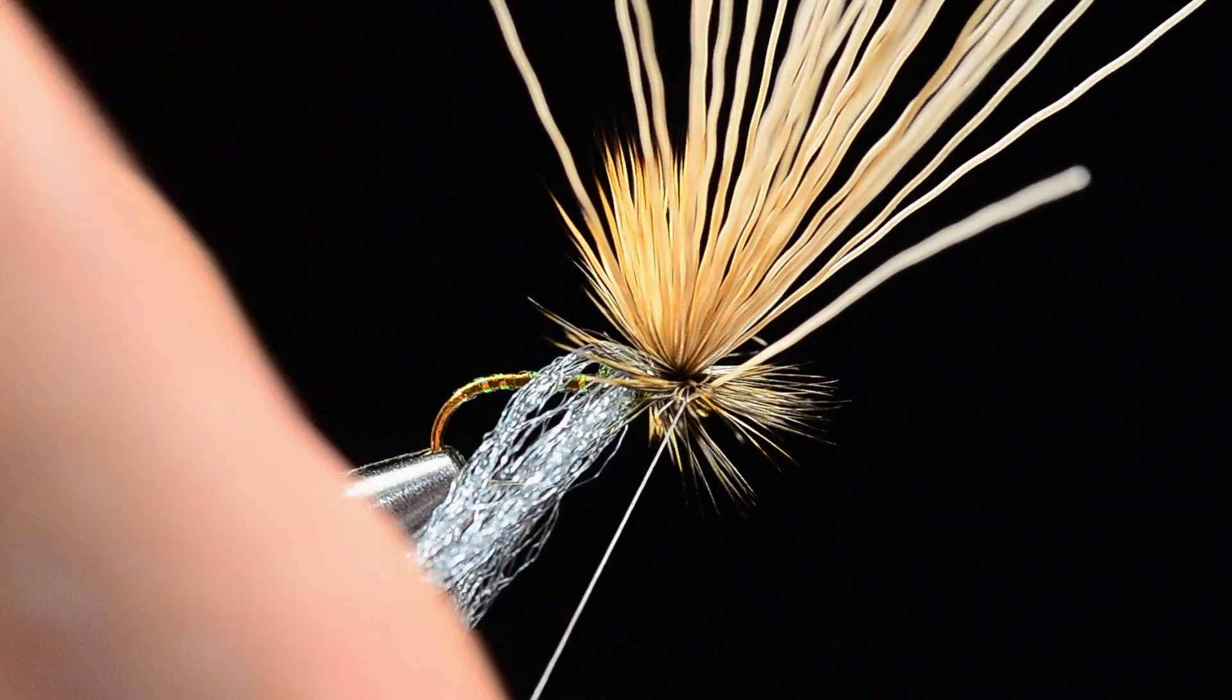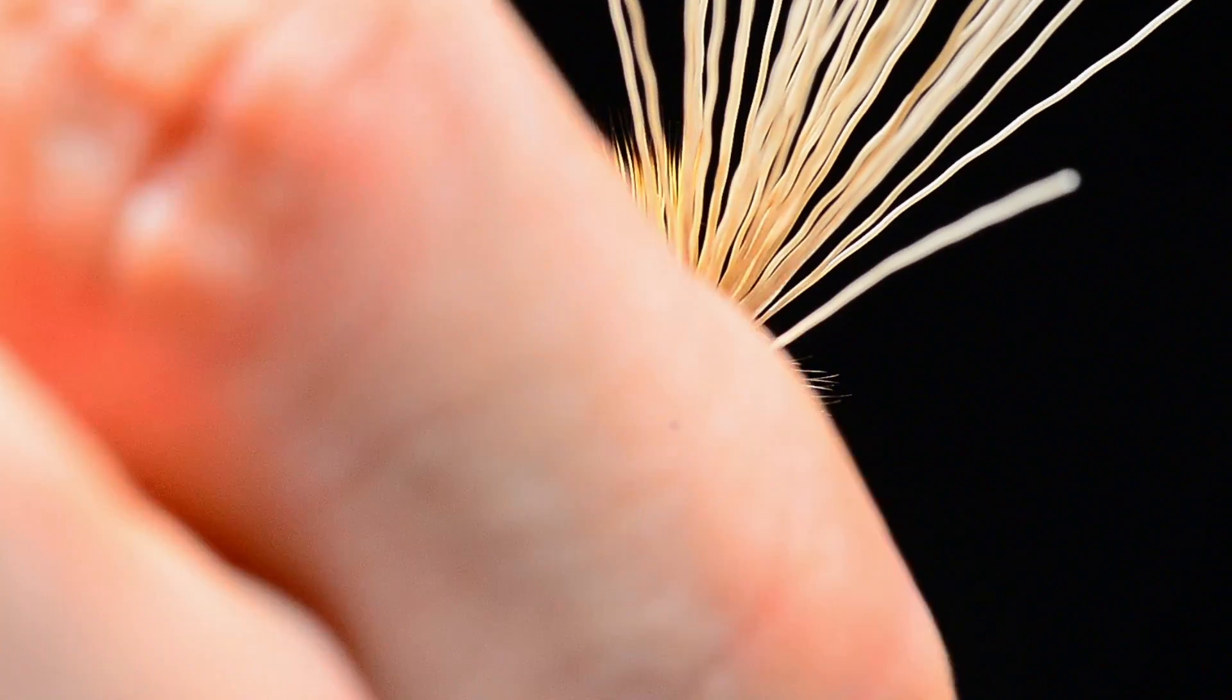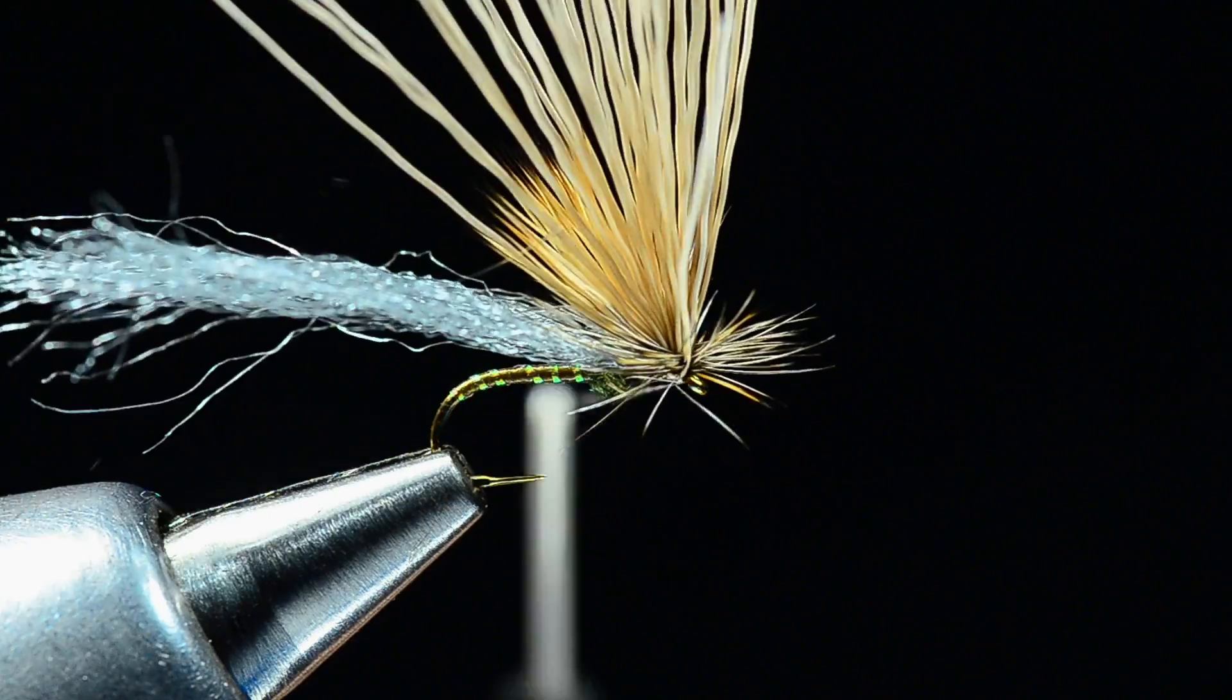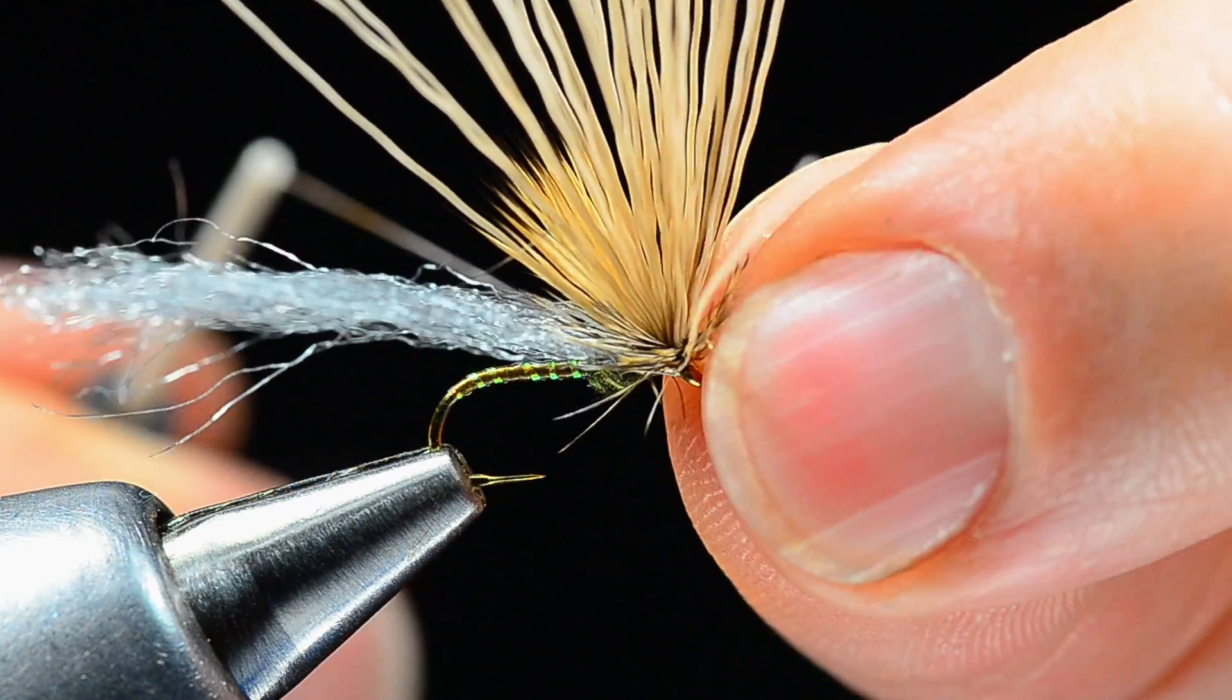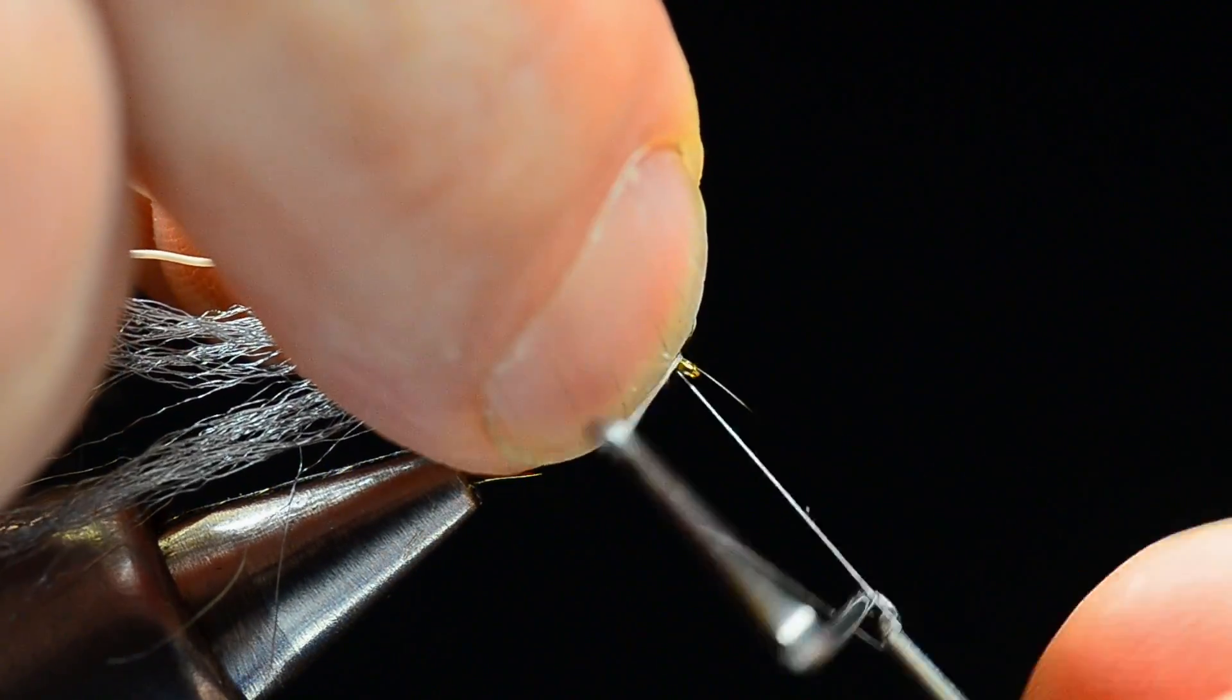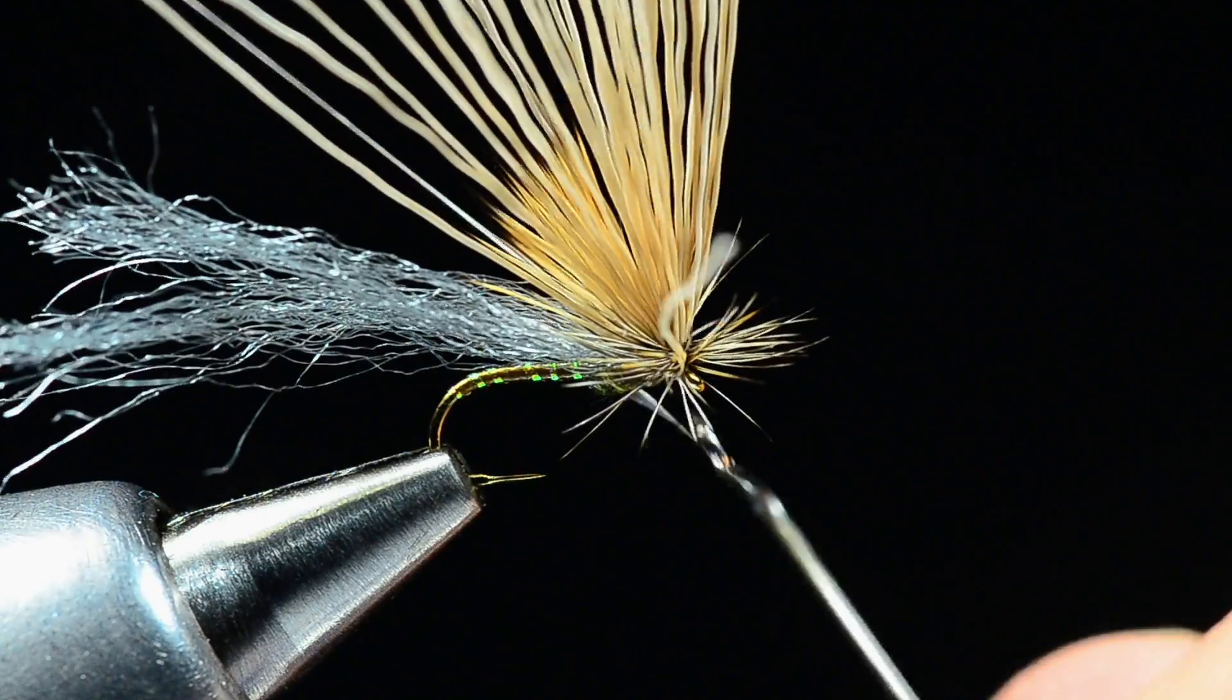So now my thread's going around the hook again, I'm going to close my fingers under the hook and sweep this hackle up and back, and just make a couple more turns here behind the hook eye. Then I'll come in and whip finish and what I'll do there is just hold everything back again.